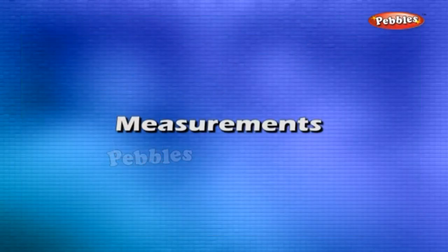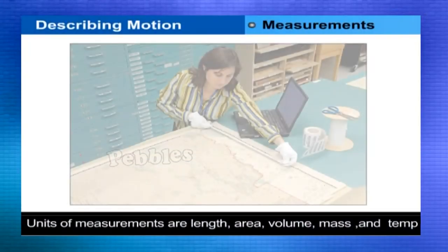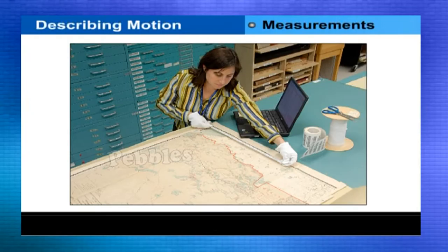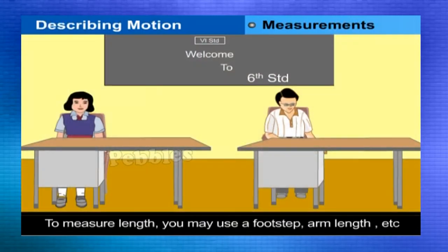Measurements. The units of measurements are length, area, volume, mass, time and temperature. To make your judgment more reliable and accurate, the actual measurements are taken. The length of length you may use a footstep, arm length, that is cubit, or hand span, etc.